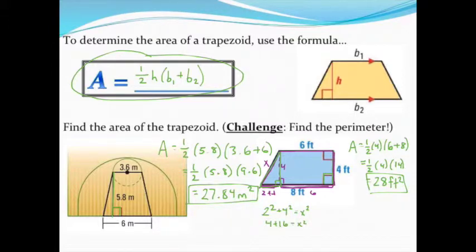Simplifying that, I get 20 equals x squared. Finally, I'll take a square root, and I find out that side length is about—let's round to two decimal places—about 4.47 feet. Knowing that side now, I have all four sides and can find the perimeter.